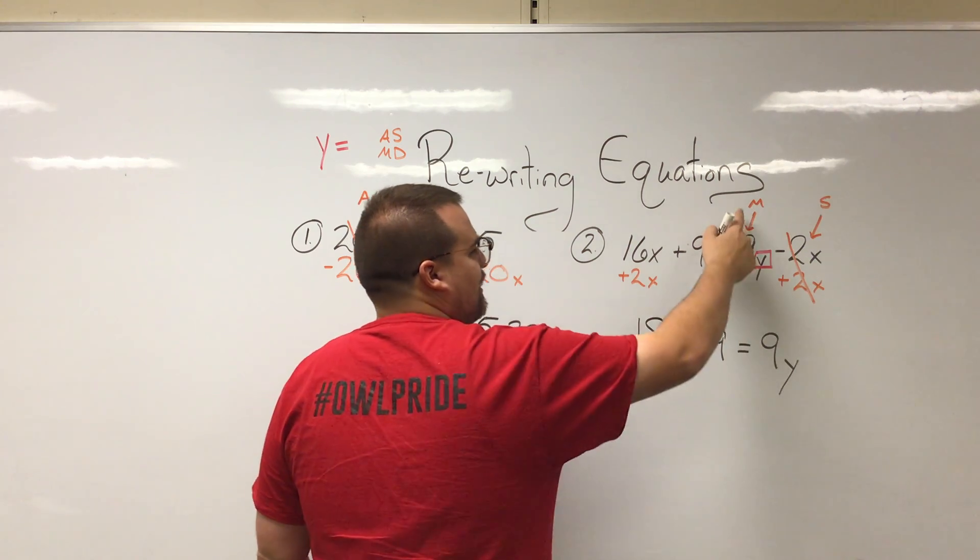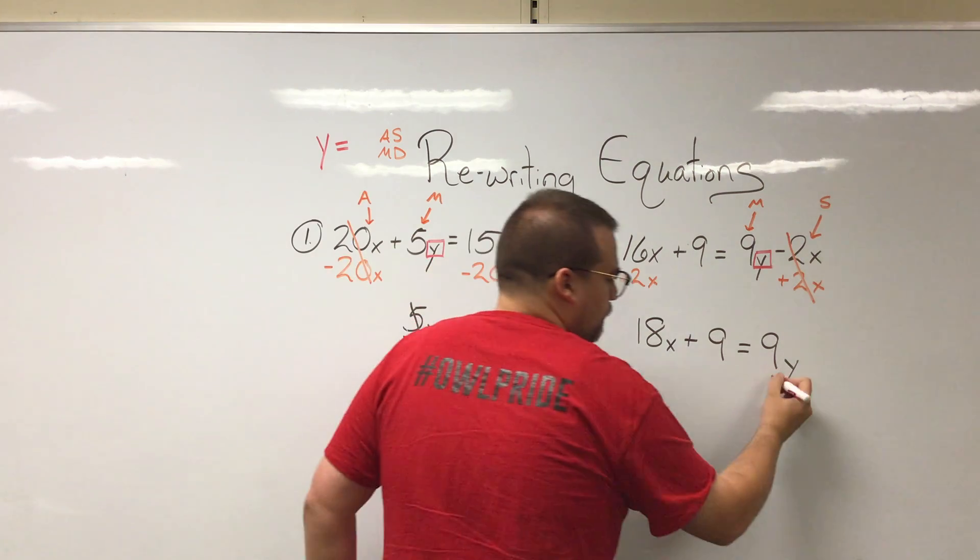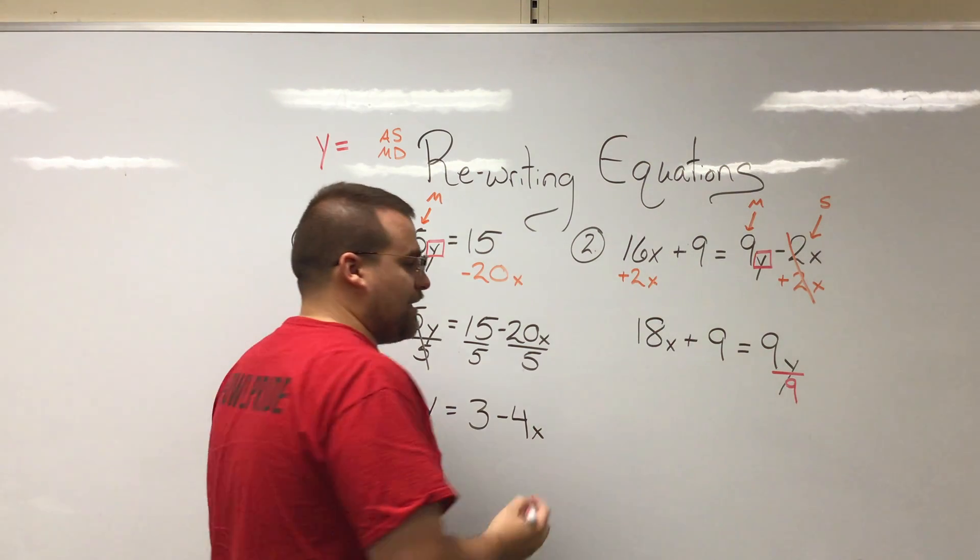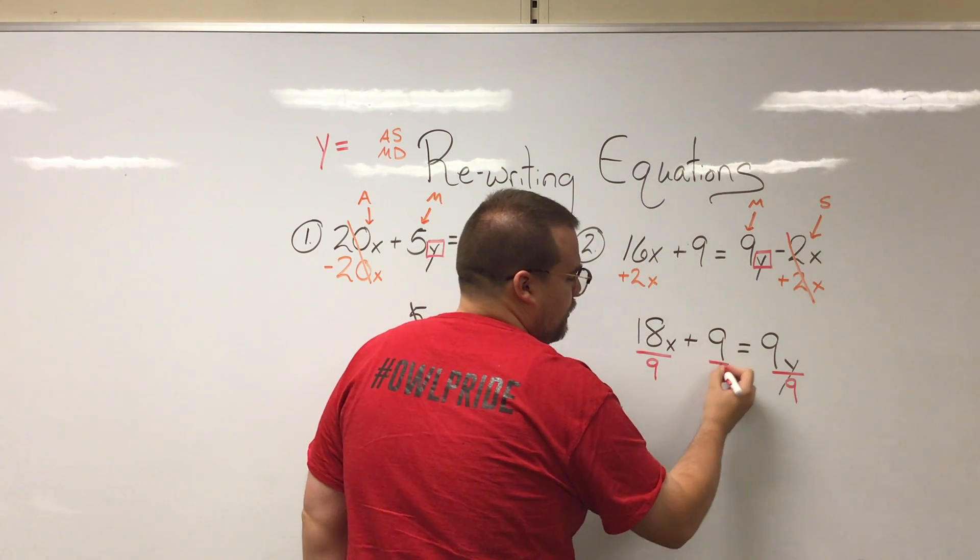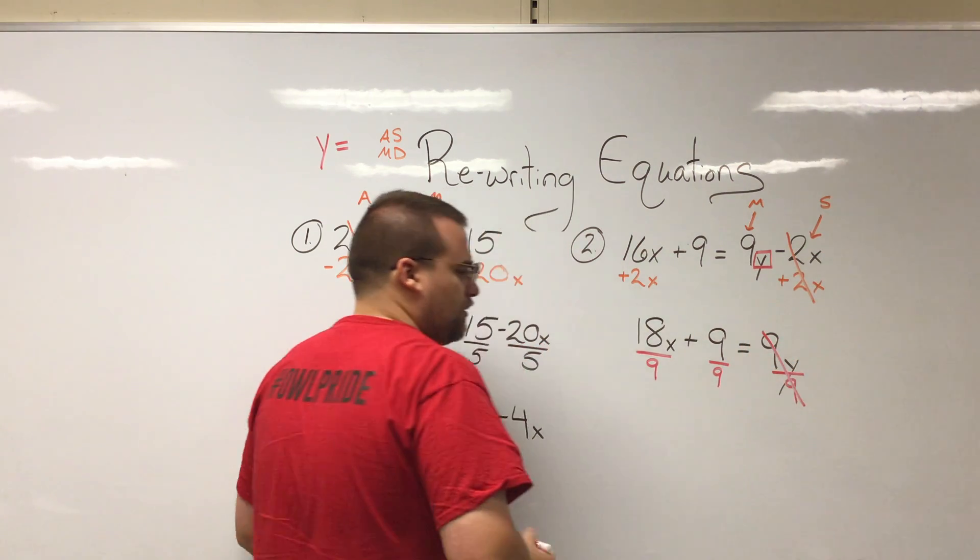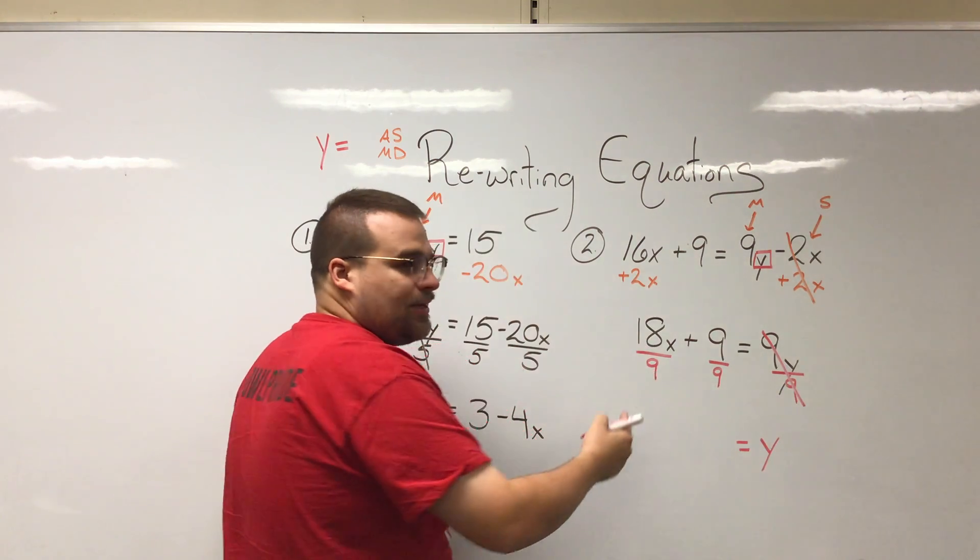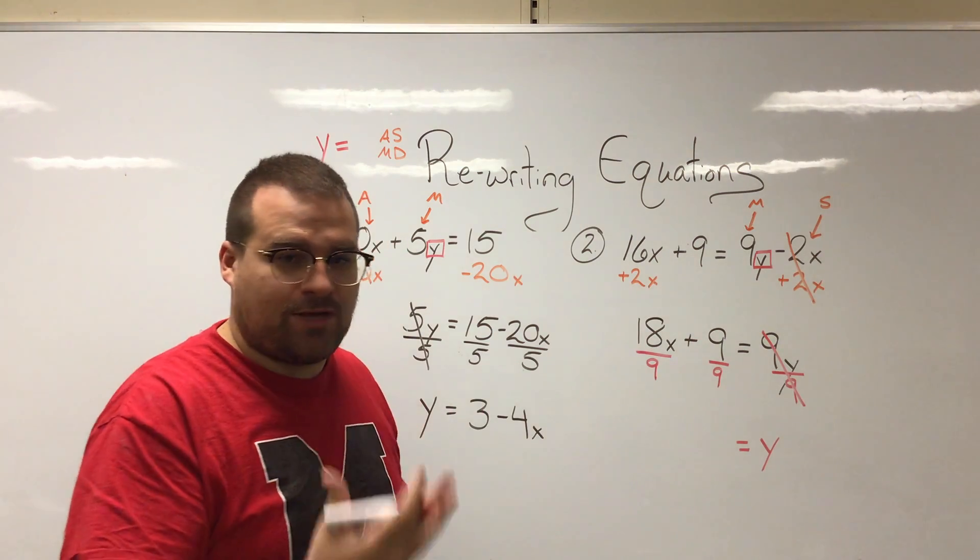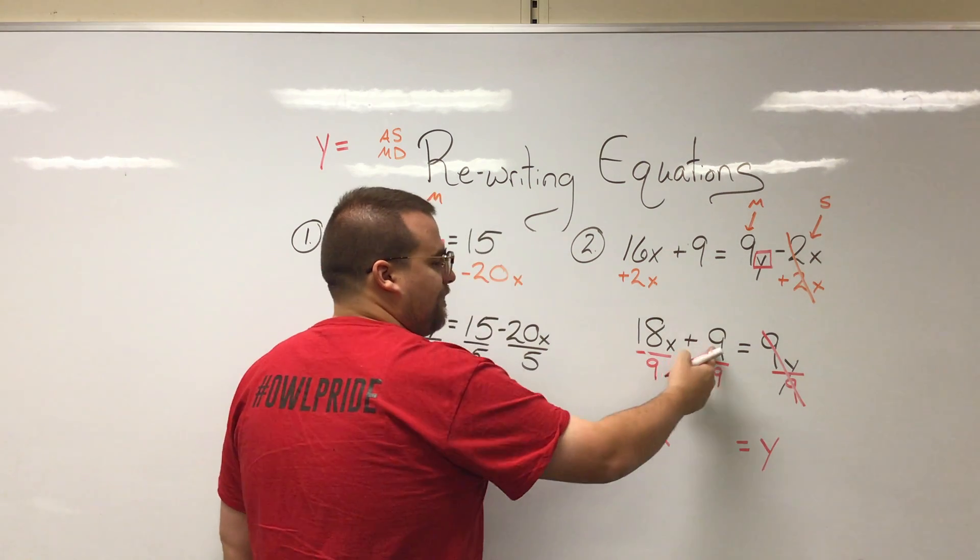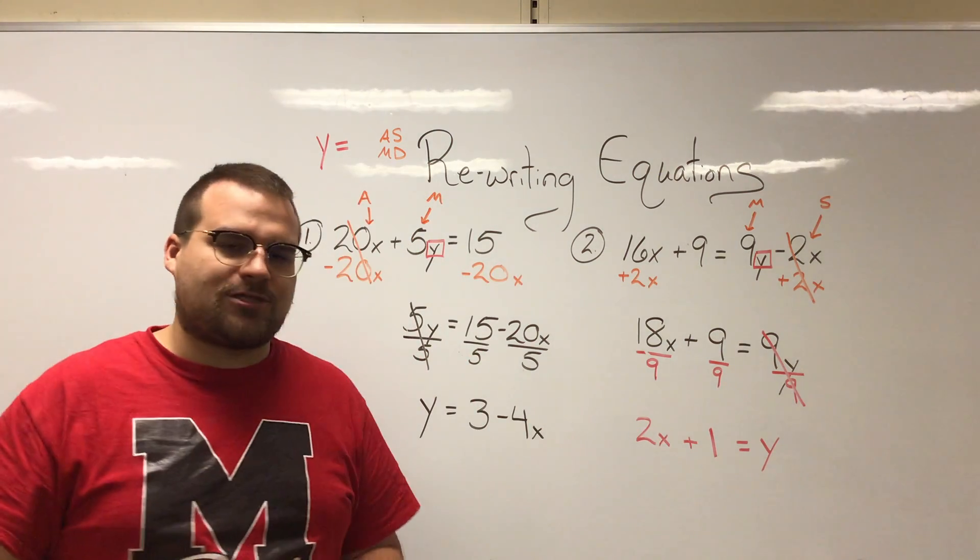All we have left with the y is that 9 which is multiplying, so we're going to divide. And in this case again I'm going to recognize these numbers can be divided by 9, so I'm going to divide each one separately. So these cancel each other out, leaving us with just y. 18 over 9, can that simplify? Can that divide? Yes, it becomes a 2. So 2x. And then we have 9 over 9, or 9 divided by 9, well that's 1. So now we have 2x plus 1 equals y.